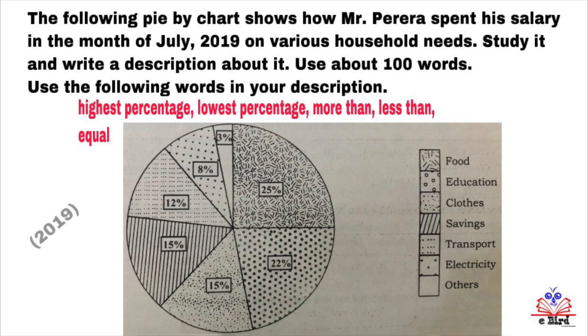Use about 100 words. Use the following words in your description: highest percentage, lowest percentage, more than, less than, equal.